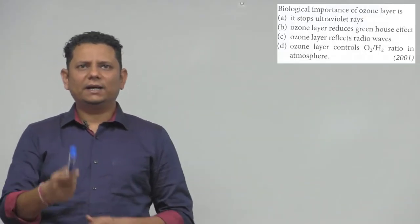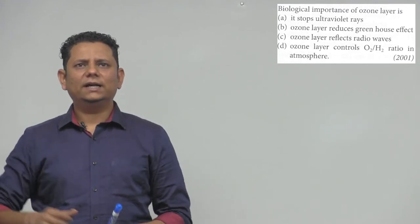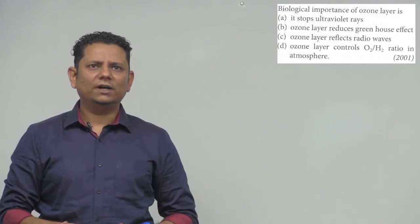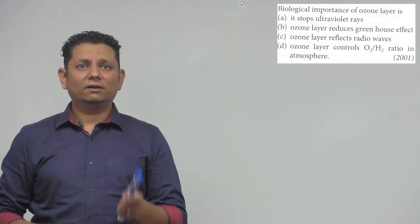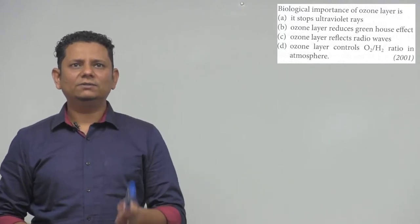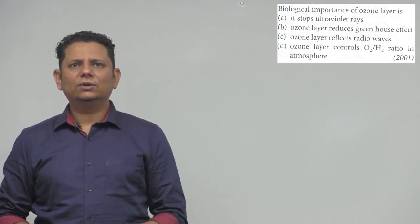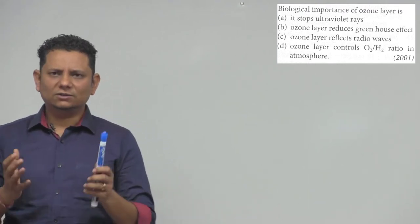Question 2001 ka sawal hai. Question says: the biological importance of ozone layer is — Pahla hai, it stops ultraviolet rays. Dousra hai ki ozone layer reduces greenhouse effect. Tisra hai, ozone layer reflects radio waves. Cautha hai, ozone layer controls O2 by H2 ratio in atmosphere.